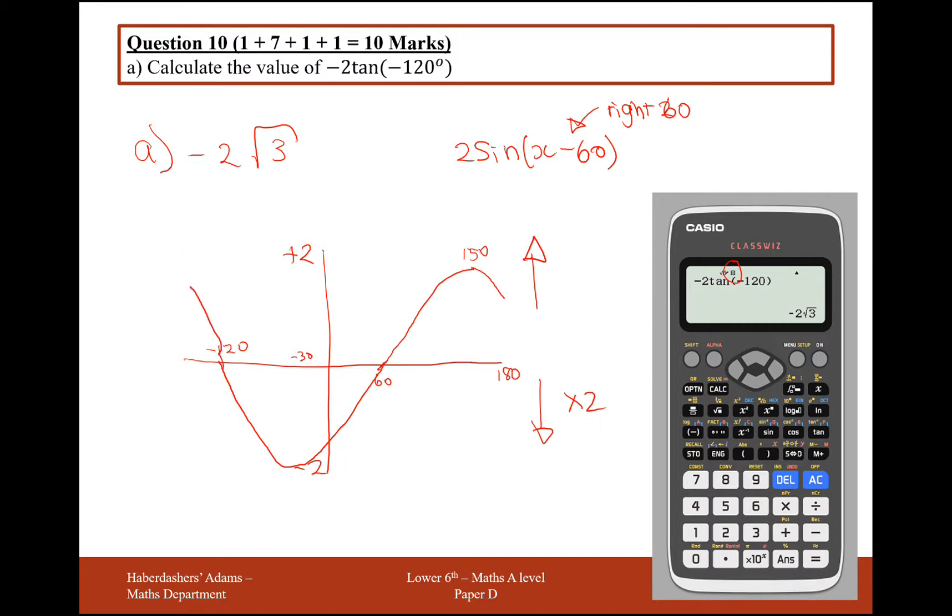Okay, so that's the first graph, and that's -2tan. Tan originally looks like this, but minus will reflect it in the x-axis. So this is going to have an asymptote still at -90 here and 90, so +90 here. And the next axis will be at +270 and -270.